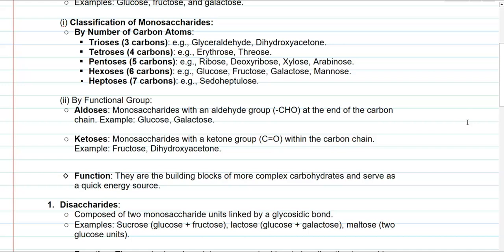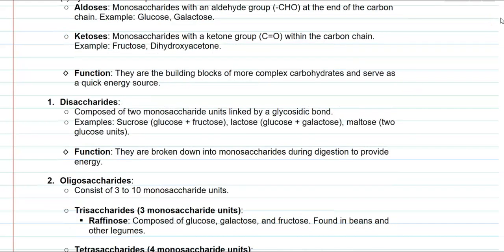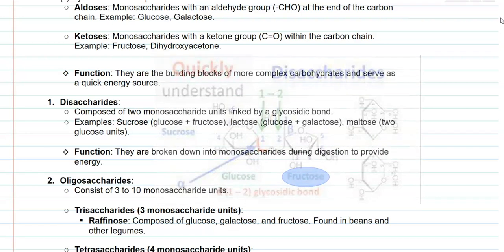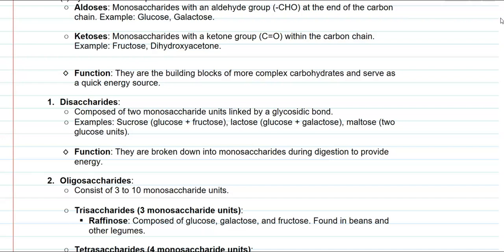The functions of monosaccharides are mainly acting as building blocks for more complex carbohydrates, and they also serve as a quick energy source. The next group is the disaccharides, composed of two molecules of monosaccharides linked by a special bond called a glycosidic bond. Examples include sucrose, made up of one molecule of glucose and fructose; lactose, a milk sugar made of glucose and galactose; and maltose, made of two units of glucose. Disaccharides are broken down during hydrolysis into monosaccharides, which serve as energy sources for organisms.